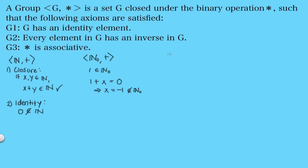Let's modify it once more to include inverses. Now we have the set of integers with addition. This set is closed under addition, it contains zero so it has an identity, and every element has an inverse. Since addition is also associative, this is a group. In a similar way, we can show that the rationals with addition, the real numbers with addition, and the complex numbers with addition are all groups.